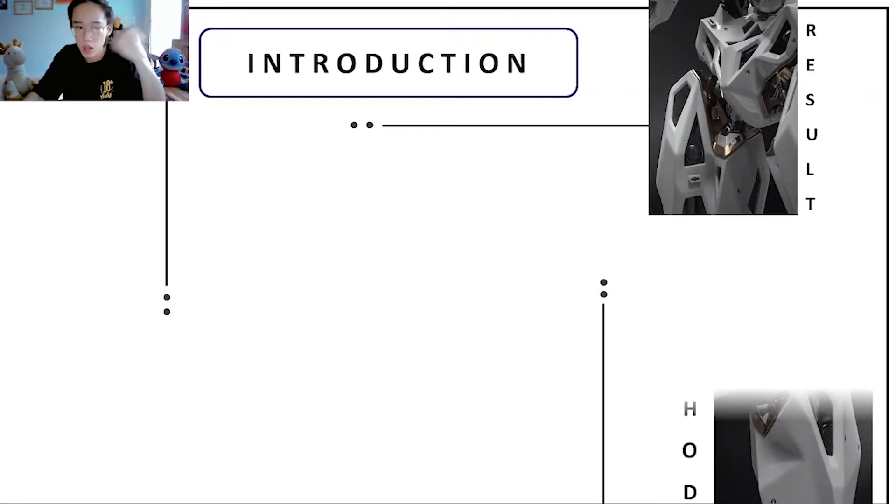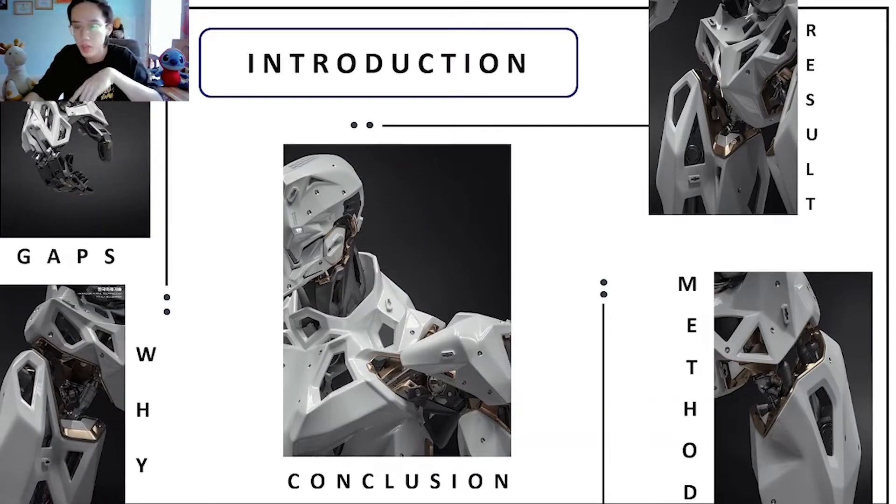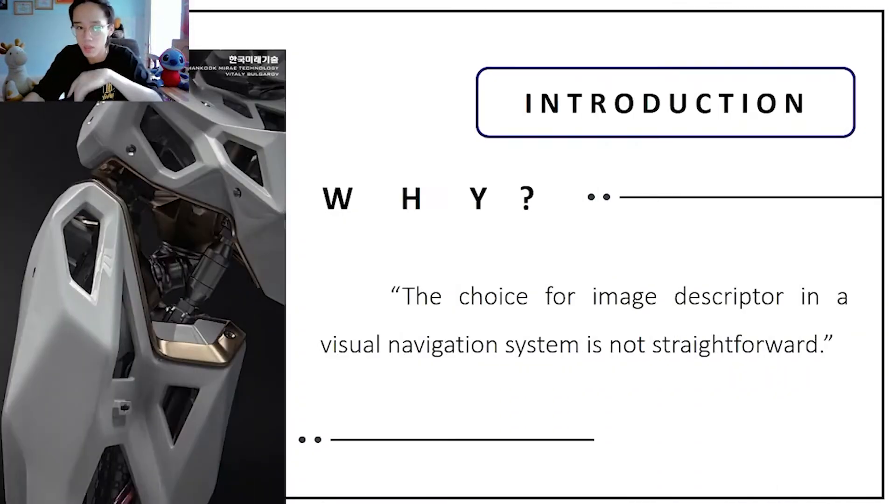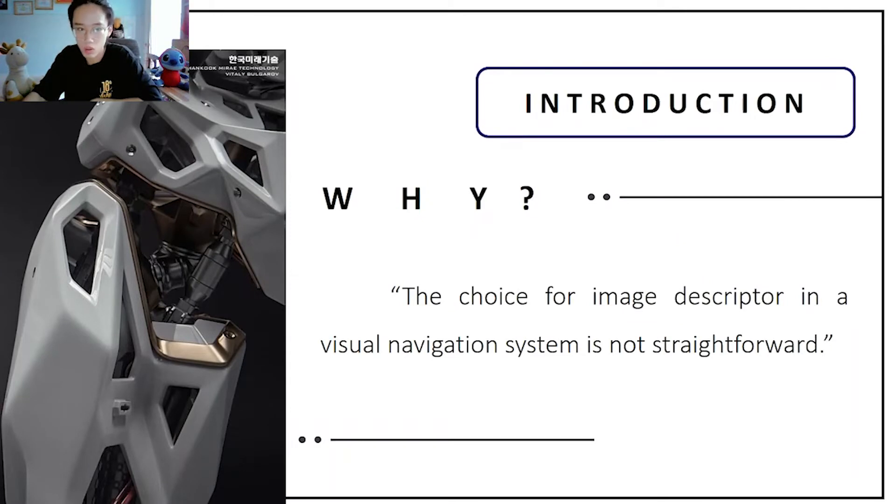In the introduction we have two parts: background and why. First, why MVEC Compact Descriptor for Visual Search is a low complexity image descriptor that offers several levels of compromise between descriptor distinctness and size. The choice for image descriptor in a visual navigation system is not straightforward. The descriptor must be distinctive enough to allow for correct localization while still offering low margin complexity and small descriptor size for real-time applications.